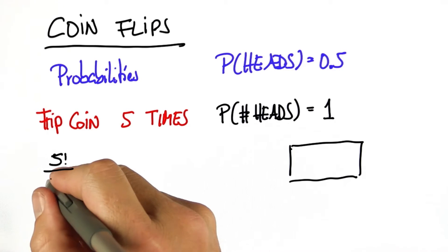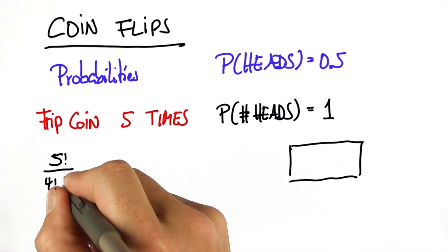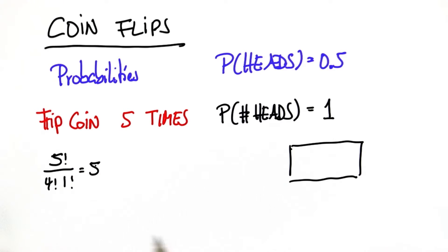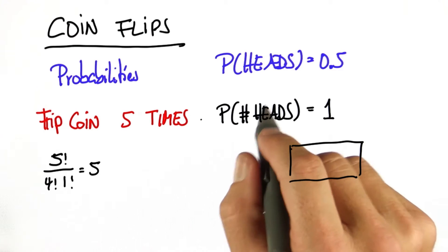Well, we know from our previous consideration that there's five ways in which the number of heads could be 1. 5 factorial over 4 factorial over 1 factorial happens to be 5.